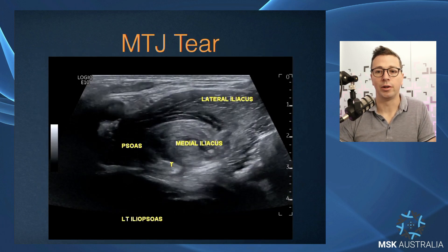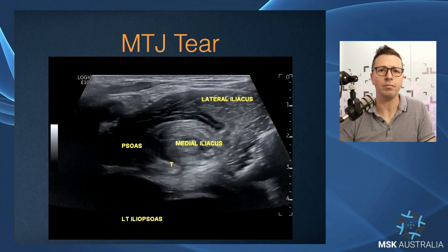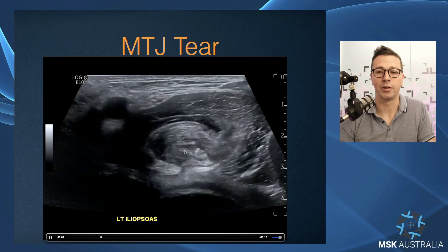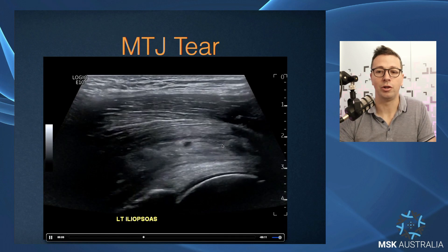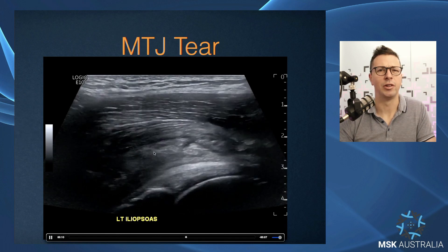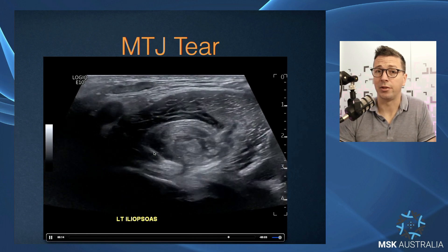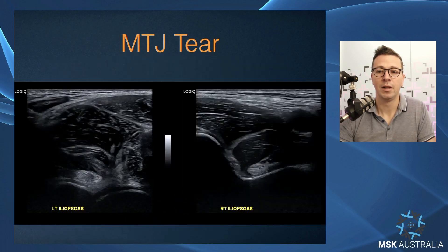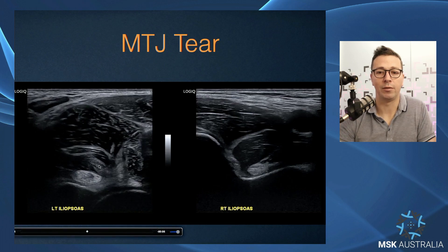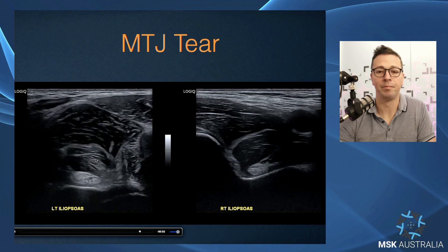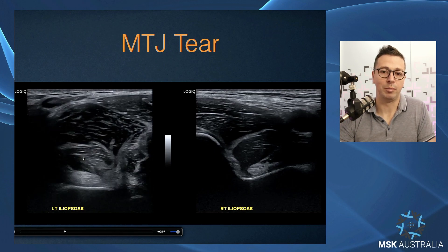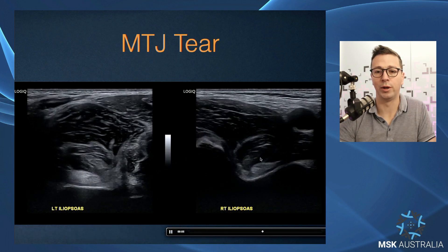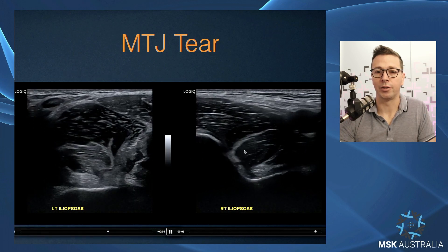The other pathology with iliopsoas is tears of the musculotendinous junction. When you tear your iliopsoas complex, you tend to tear the medial fibers of iliacus at the musculotendinous junction. In longitudinal we see that significant tear at the MTJ — just like most other muscle tears, they tear at the musculotendinous junction, which is the most common point of tearing pathology. In your hip flexor this is the medial fibers of iliacus. These tears can be quite small and subtle — compare to the other side for reference.